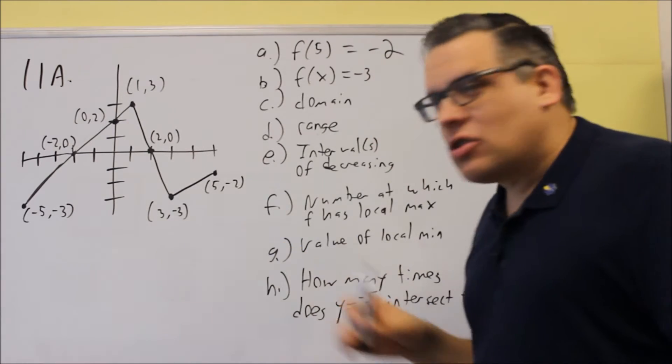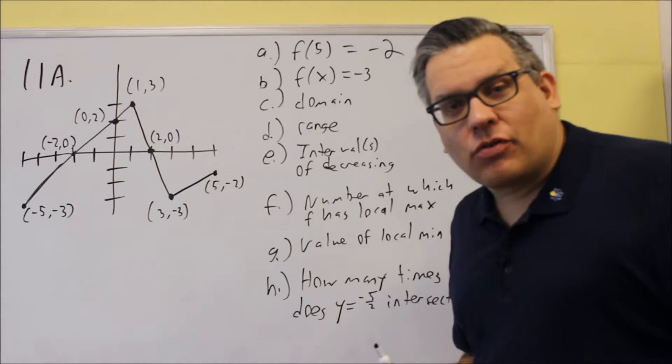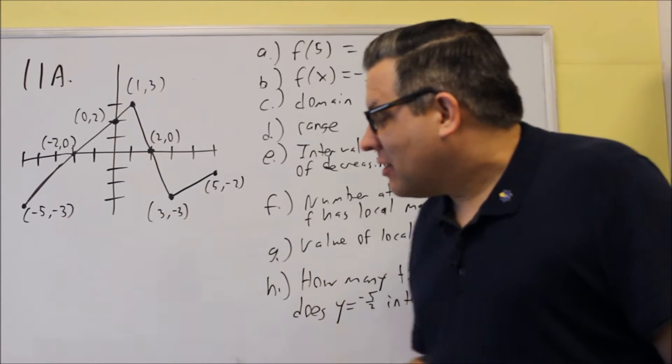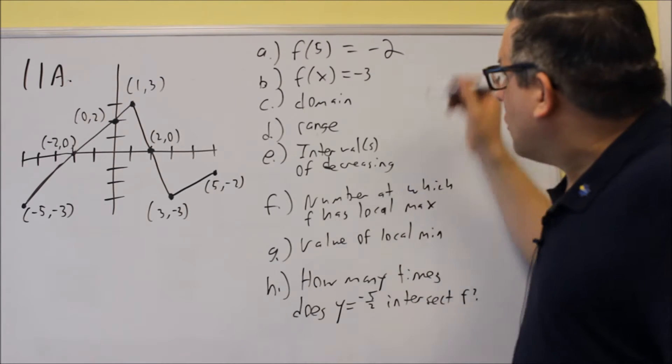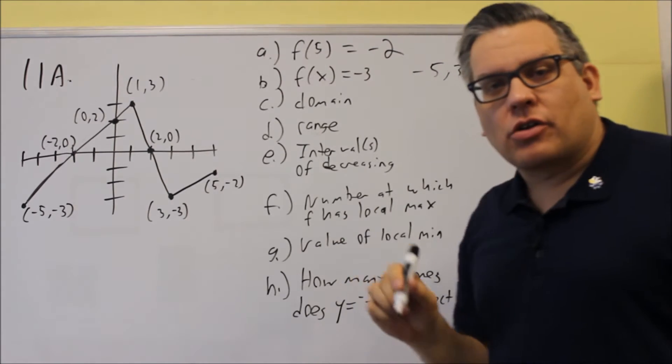Now for this particular problem, there's actually two cases where the y value is equal to negative 3. It's at negative 5 and 3, so we actually get two values. So we'll do negative 5 comma 3. There's two places where that occurs.